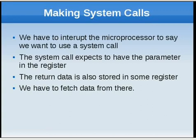In assembly, we have to pass parameters by putting them in registers. So maybe there are four parameters — the system call expects those four parameters in four different specific registers. And when the job of the system call is done, it stores the output data in some register. It's our responsibility to put data in the registers the system call expects, and to know where the system call stores the data after processing.